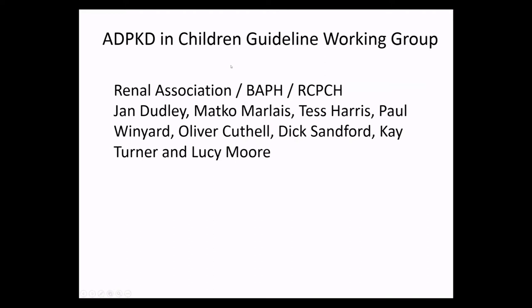One conclusion is that there is huge variability across the country and we need to develop guidelines so that everybody receives the same treatment. So a mixture of different associations — the Renal Association, the BAPN (British Association of Paediatric Nephrology) and the Royal College of Paediatric and Child Health — have got together with many nephrologists, geneticists and patients, and we're developing these guidelines. It's a work in progress. It's taking a while, but should be out hopefully in the next few months.